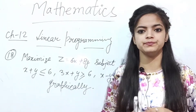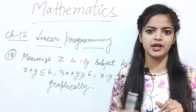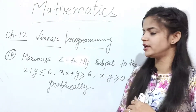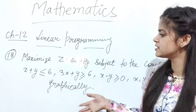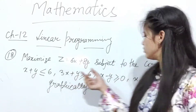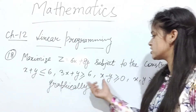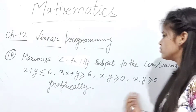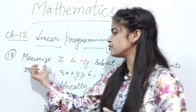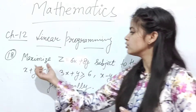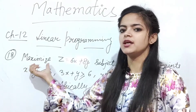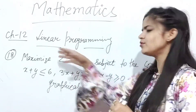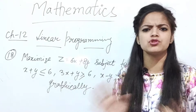Chapter number 12 is Linear Programming — the easiest chapter. In this chapter you have to maximize or minimize a function subject to given constraints. You will be given some conditions, and you have to represent them and then maximize or minimize. It is a small chapter that you should definitely cover.